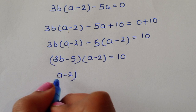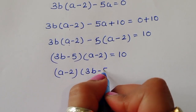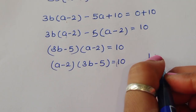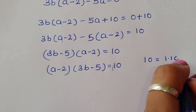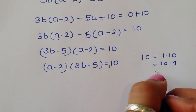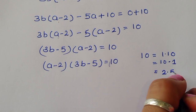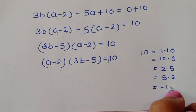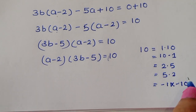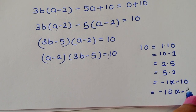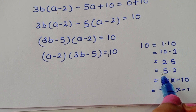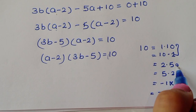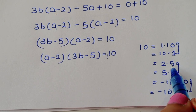So (a − 2)(3b − 5) = 10. We now find all integer factor pairs of 10: (1, 10), (10, 1), (2, 5), (5, 2), (−1, −10), (−10, −1), (−2, −5), and (−5, −2). These give us four cases to solve.